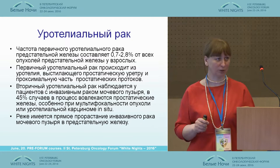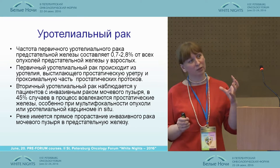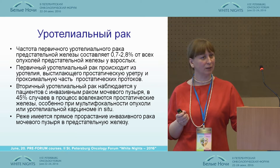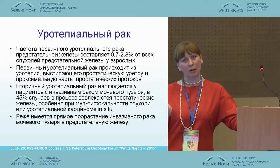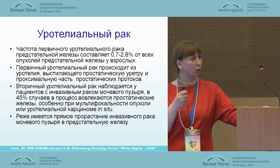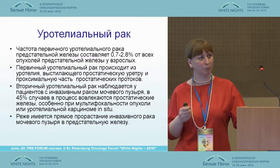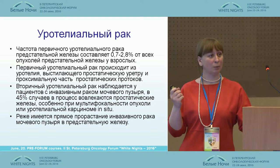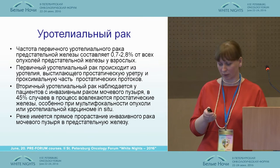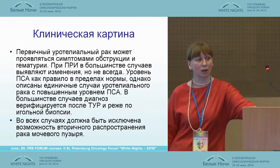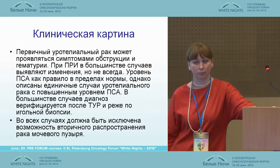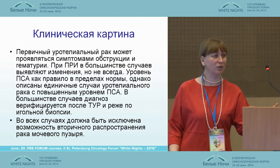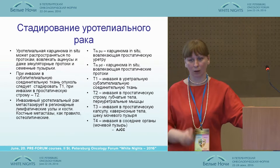The last type is urothelial cancer. Its frequency is about 3% of all prostate cancers. It comes from urothelium in the urethra and periurethral prostatic glands, and through metaplasia it can be transformed into neoplastic changes. Secondary urothelial cancer can be observed in patients with bladder cancer. The clinical picture includes symptoms of obstruction and hematuria, and PSA falls within normal limits. After transurethral resection, you can detect this type of cancer.